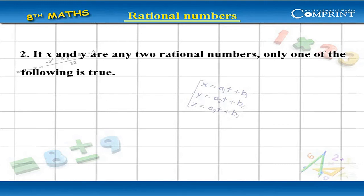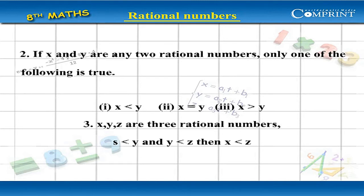2. If x and y are any two rational numbers, only one of the following is true: (i) x less than y, (ii) x equal to y, (iii) x greater than y.